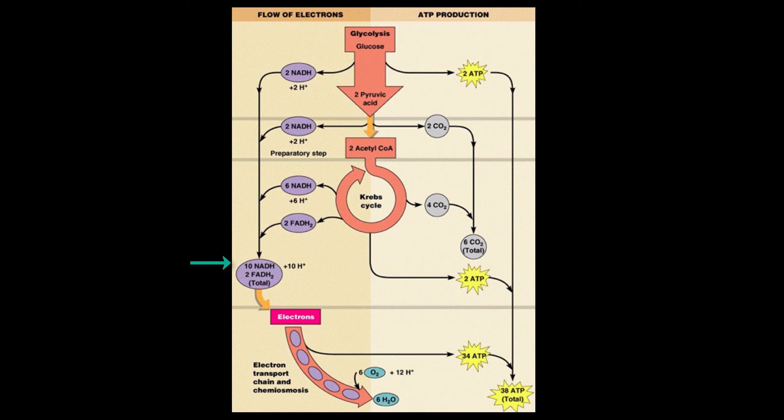We produce 10 NADH in glycolysis and the Krebs cycle. Since 3 ATP are produced for each NADH, we're going to produce 30 ATP.